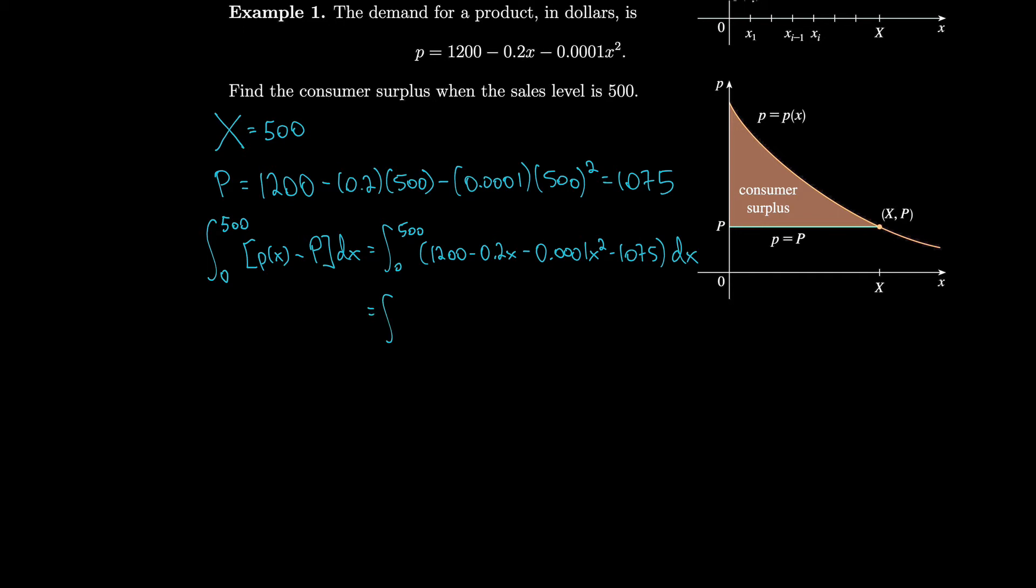That's equal to the integral of 125 minus 0.2x minus 0.0001x squared. We take the antiderivative: we get 125x minus 0.1x squared minus 0.0001 times x cubed over three, and we evaluate that from zero to 500.